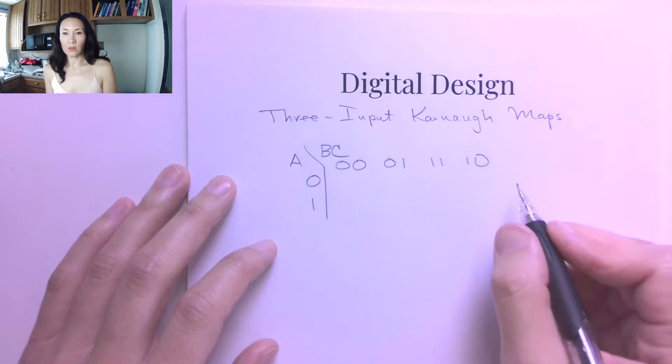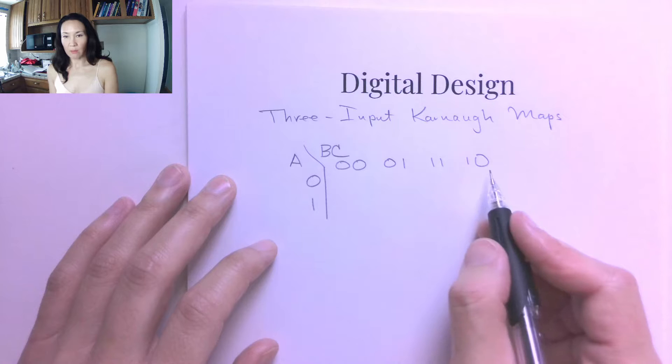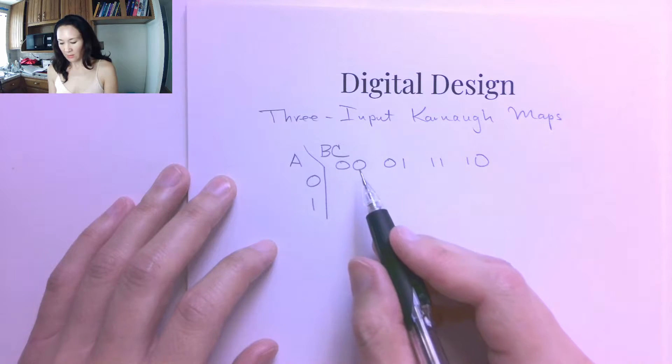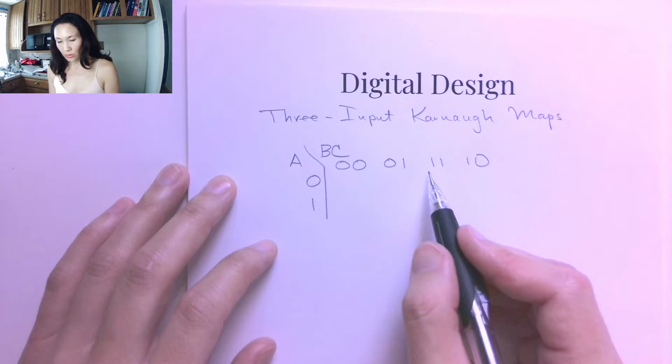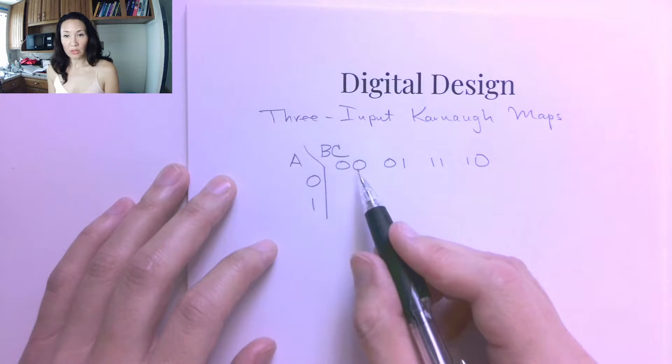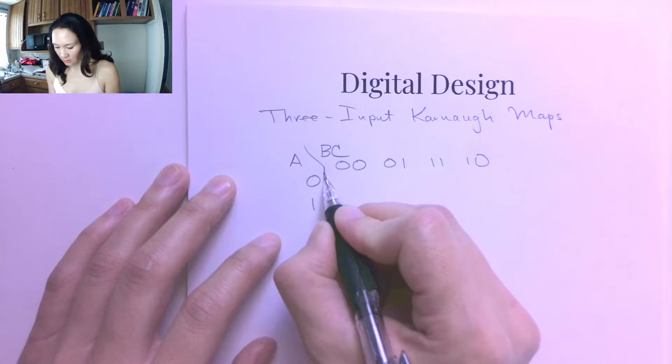So here's where our gray code comes in. You'll notice I didn't just count in binary here because this would be binary 0, 1, 3, 2. So this is actually gray code. We have to do this in order to have only one bit change between each state to the next.